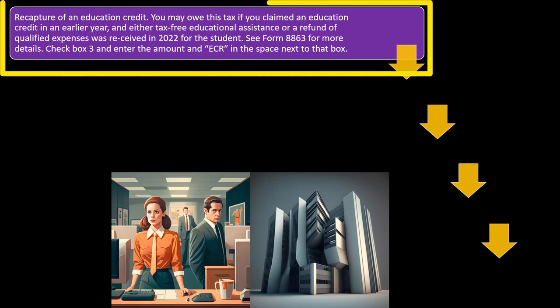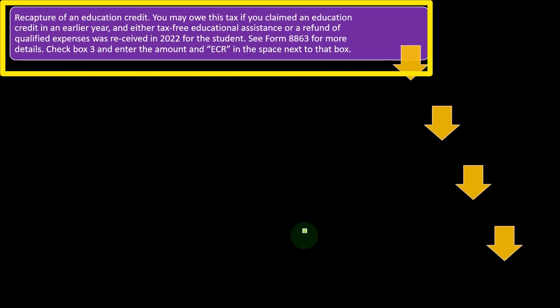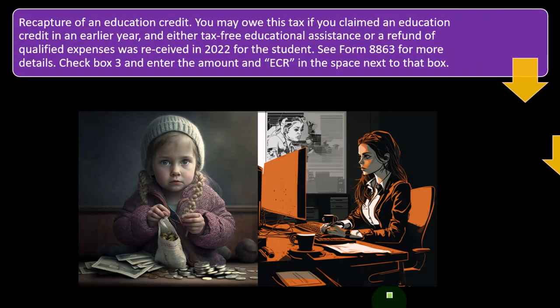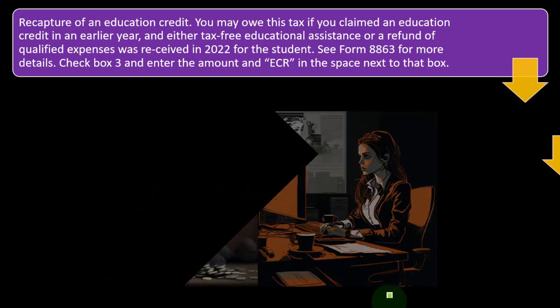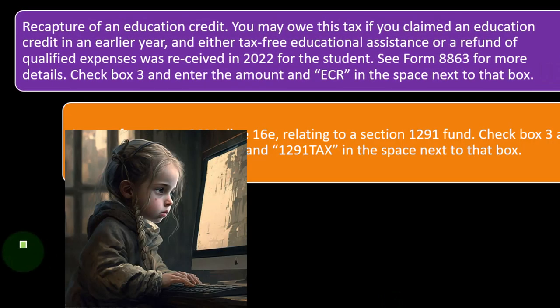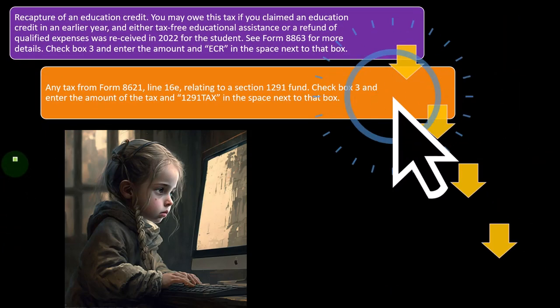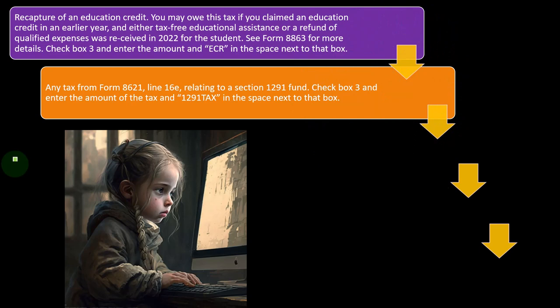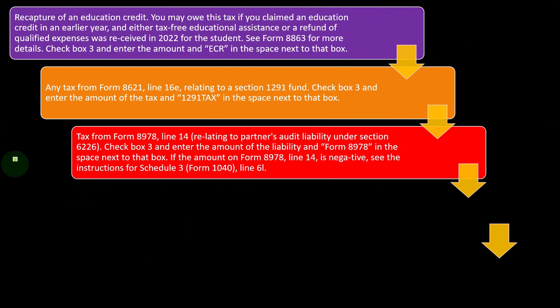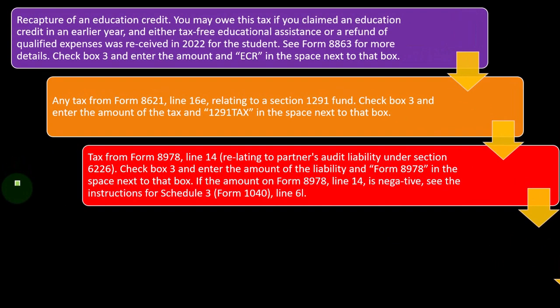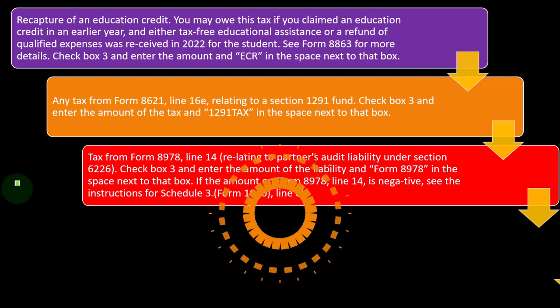Recapture of an election credit: you may owe this tax if you claimed an education credit in an earlier year and either tax-free educational assistance or a refund of qualified expenses was received in 2022 for the student. See Form 8863 for more details. Tax software can help with some of these situations as well. Any tax from Form 8621, Line 16e, relating to a Section 1291 fund — check box 3 and enter the amount of the tax and '1291 tax' in the space next to the box.